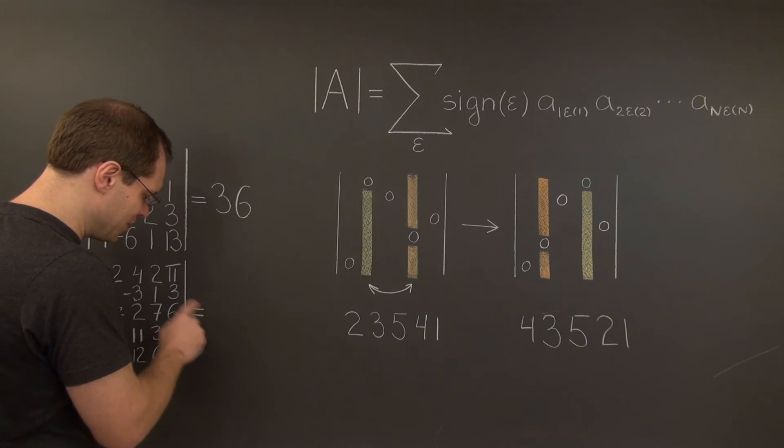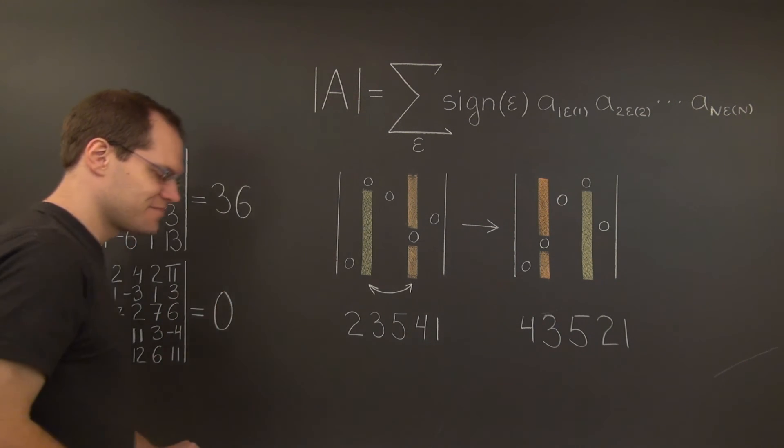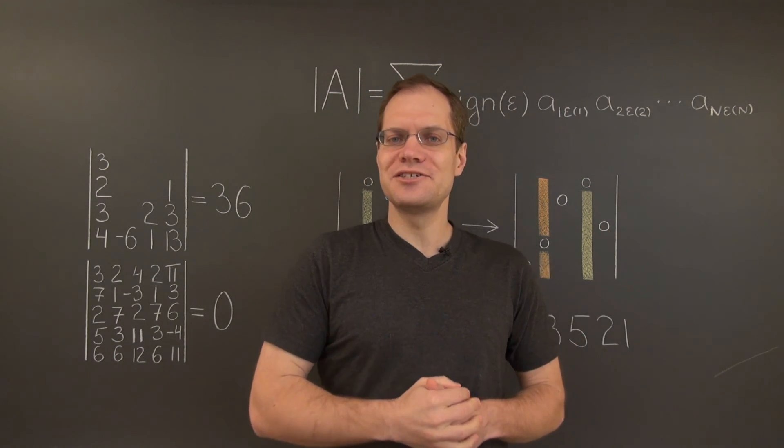And let's also document what happened here. All right. And that's it for the alternating property.